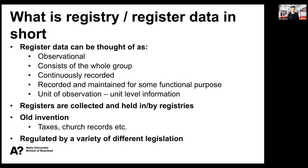An important aspect is that this kind of data is recorded and maintained for usually some functional purpose — the fact that we're discussing the research aspect is not the main reason why registry data exists at all. And then an important part is the unit of observation. We're not talking about aggregate data; we're talking about unit-level information. Often it's the individual human being, but not only — almost anything can be recorded and be the object of observation.